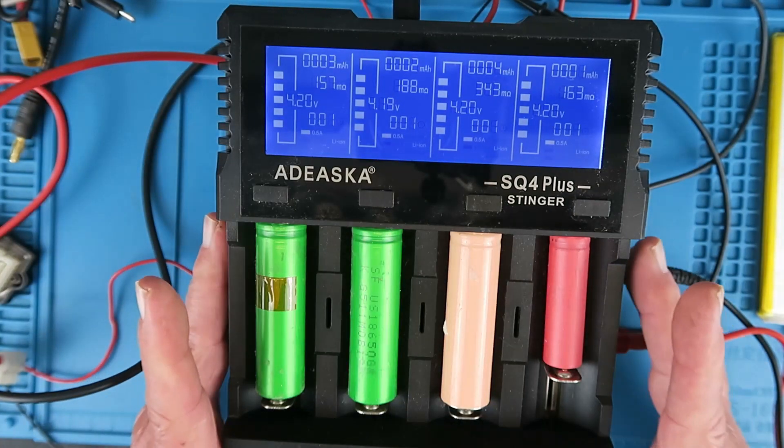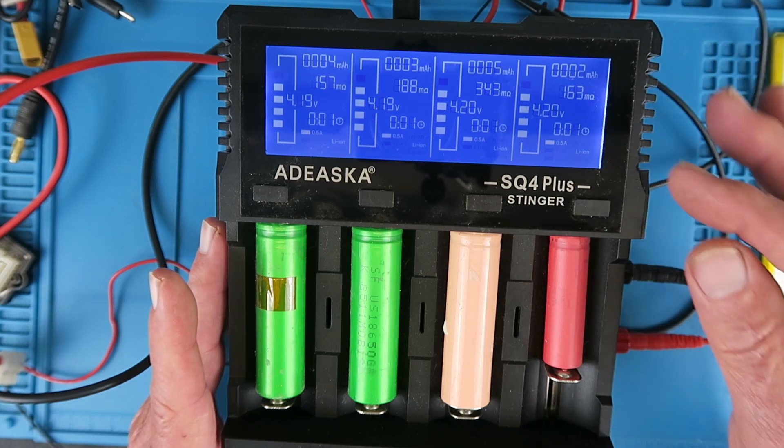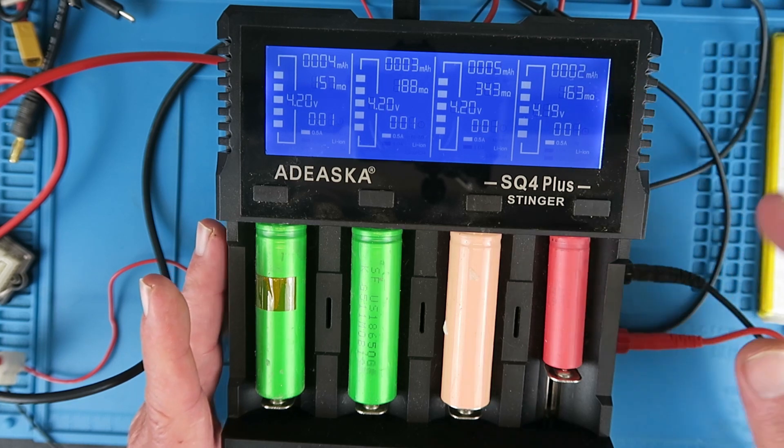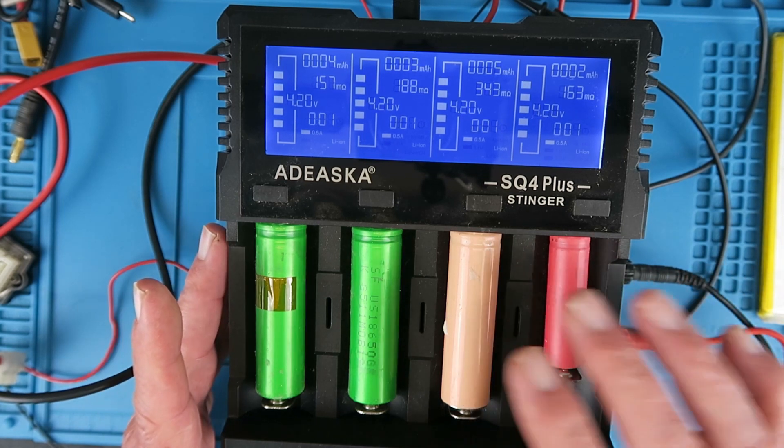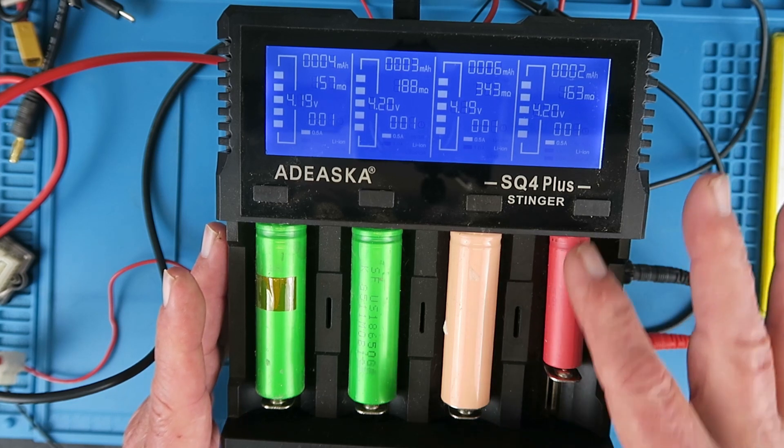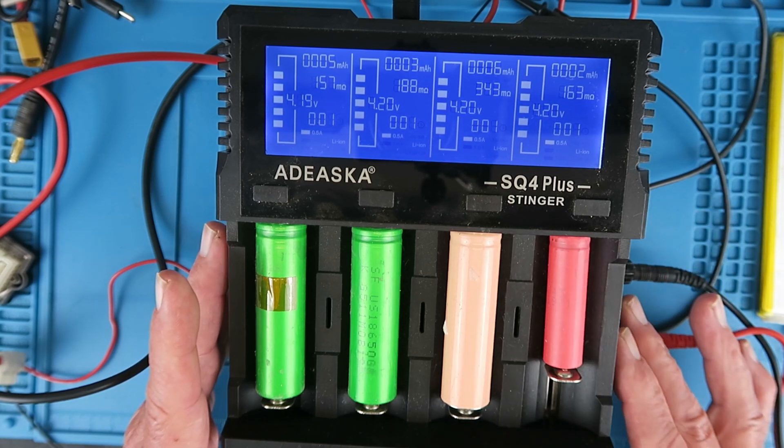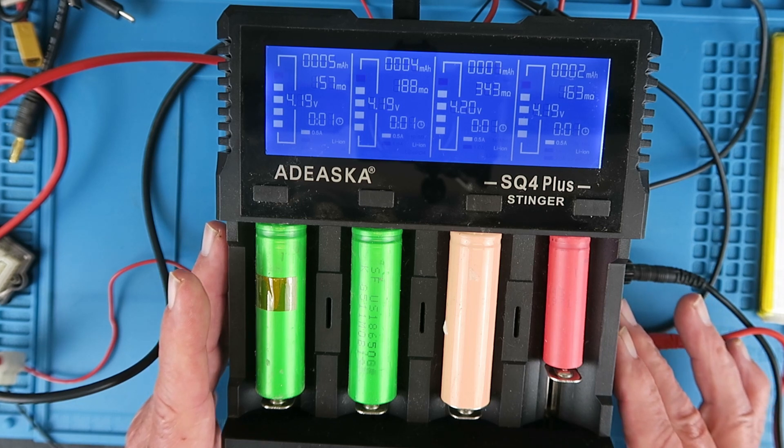I especially like this charger as it gives me loads of information including the internal resistance of the cell, which is really important. The only thing I don't like about it is that it's only suitable for these cylindrical 18650 and similar cells. I was really looking for something truly universal and I found it.